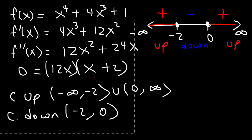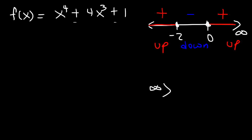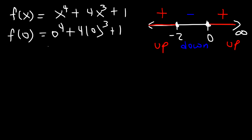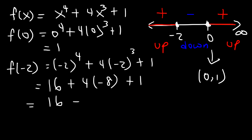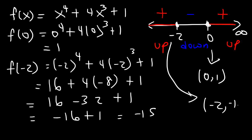Now let's get the y-coordinates for both inflection points. Plugging in x = 0: f(0) = 0 + 0 + 1 = 1, so one inflection point is (0, 1). Plugging in x = −2: f(−2) = (−2)⁴ + 4(−2)³ + 1 = 16 − 32 + 1 = −15. So the second inflection point is (−2, −15).